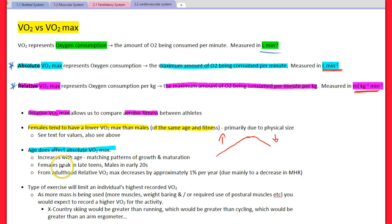Females peak in late teens, males in early 20s. This decrease tends to mainly come from, as we age, a decrease in heart rate.